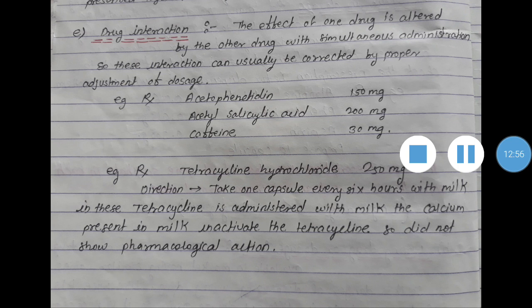To summarize, the reasons due to which therapeutic incompatibility occurs are: first, error in dose; second, wrong drug or dosage form; third, contraindicated drug; fourth, synergistic and antagonistic drug; and fifth, drug interaction. I hope you are all clear with the meaning of therapeutic incompatibility and the reasons due to which it occurs. Thank you.